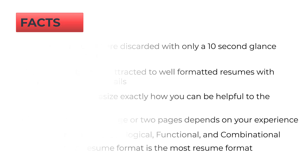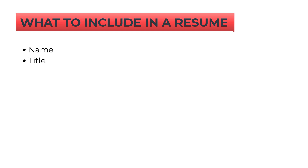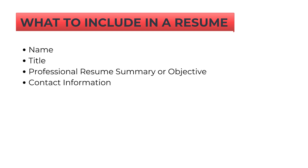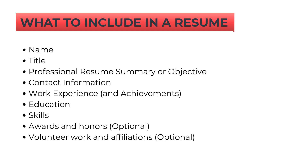Let's see what to include in your resume. The popular sections of a resume are your name, title, professional resume summary, your contact information, your work experience or achievements, education details, your skills, and your awards and honors, volunteer work and affiliations. Awards and honors, volunteer work, and affiliations are optional — it's up to you to mention them or not.